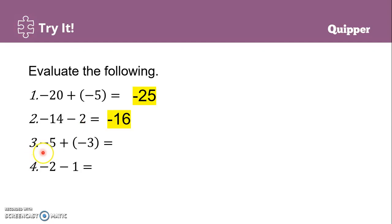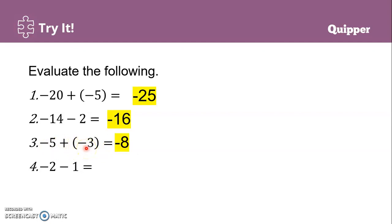Next: negative 5 plus negative 3. This becomes negative 5 minus 3. Common sign is negative, so we copy the negative sign and add 5 and 3, giving us negative 8. Last one: negative 2 minus 1. Common sign is negative, copy it, and 2 plus 1 gives 3. The answer is negative 3.